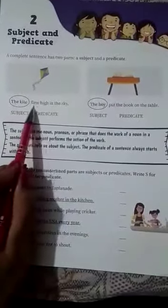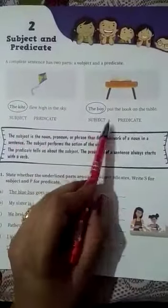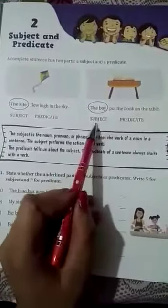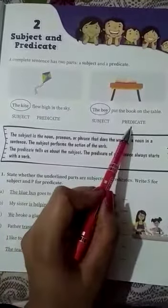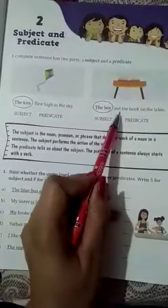The boy put the book on the table. The boy is subject. Put the book on the table is predicate. And predicate always starts with the verb.